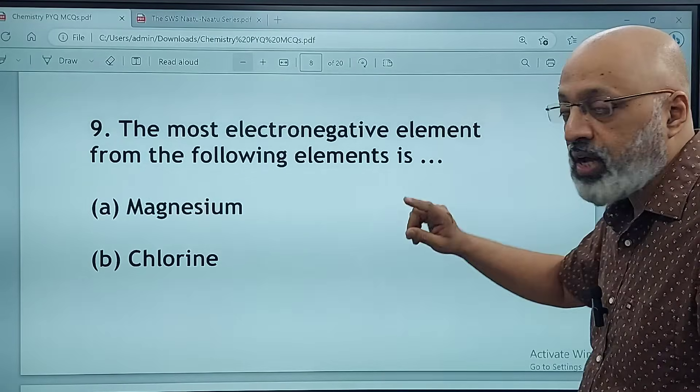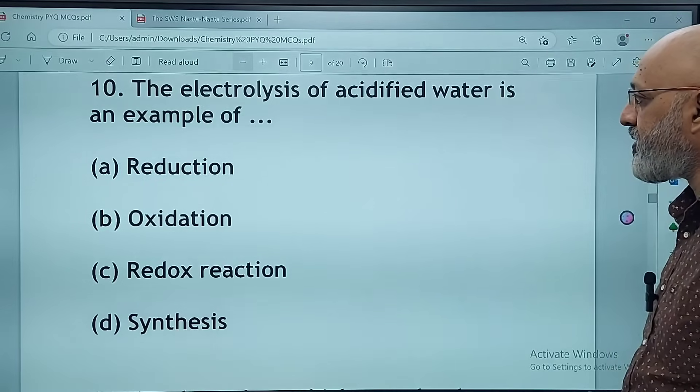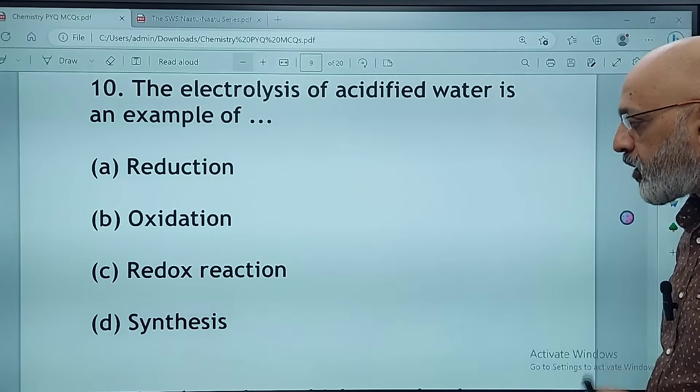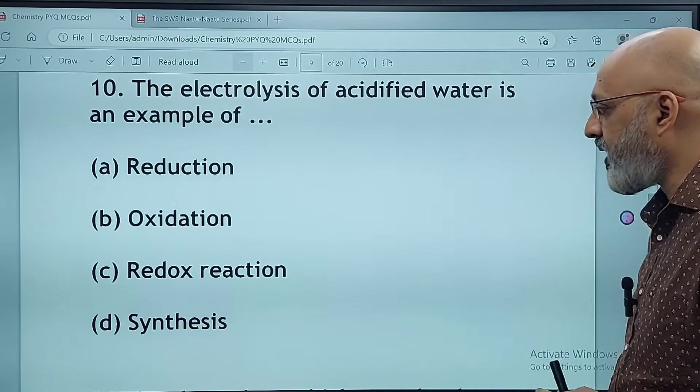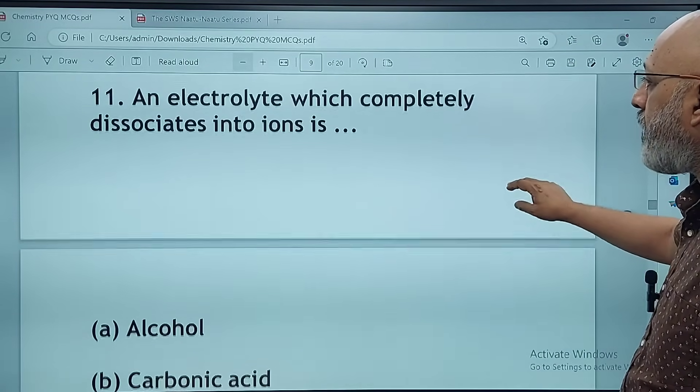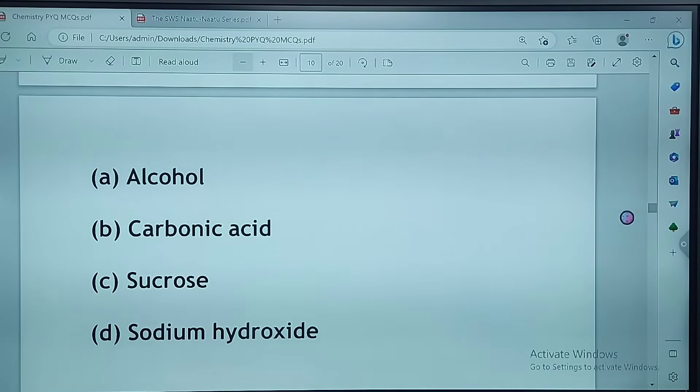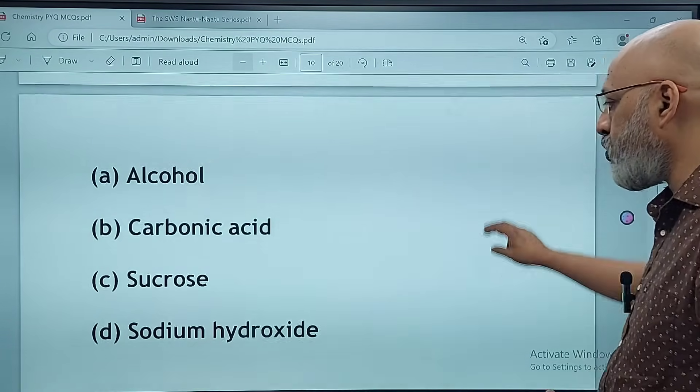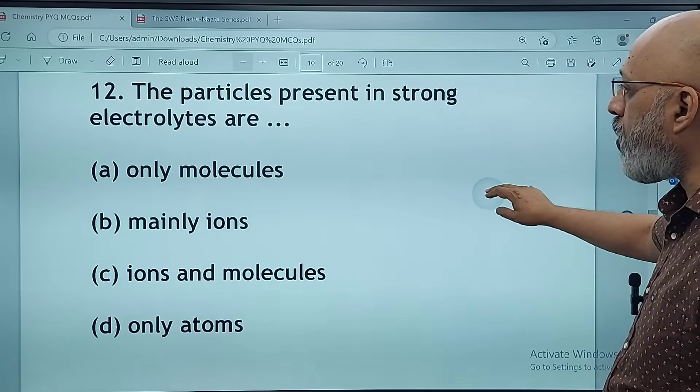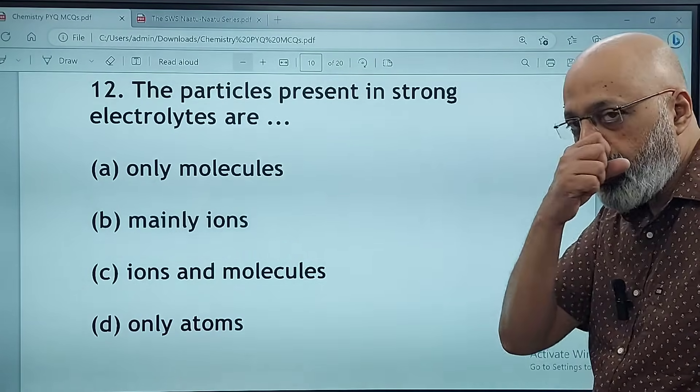The electrolysis of acidified water is an example of reduction, oxidation, redox reaction, or synthesis. The correct answer is C, redox reaction. An electrolyte which completely dissociates into ions is sucrose, alcohol, carbonic acid, or sodium hydroxide. The correct option is D, sodium hydroxide. The particles present in strong electrolytes are only molecules, mainly ions, ions and molecules, or only atoms. The correct option is B, mainly ions.